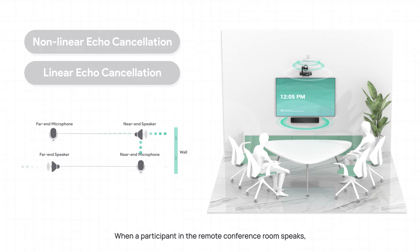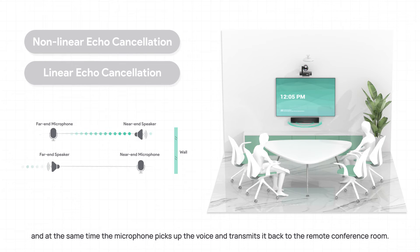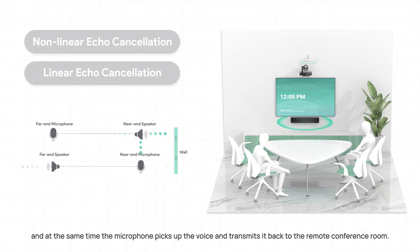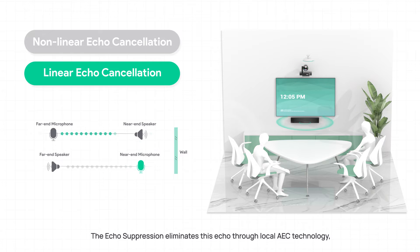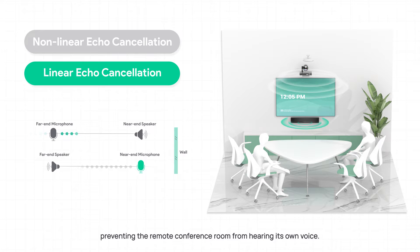When a participant in the remote conference room speaks, the speakers in the local conference room play the voice of the remote end, and at the same time the microphone picks up the voice and transmits it back to the remote conference room. The echo suppression eliminates this echo through local AEC technology, preventing the remote conference room from hearing its own voice.